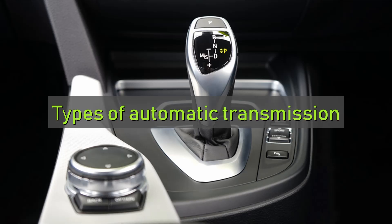We have torque converter or conventional automatic transmission, AMT which is automated manual transmission, CVT which is continuously variable transmission, and DCT which is dual clutch transmission. Now let's get into the details of each of these.